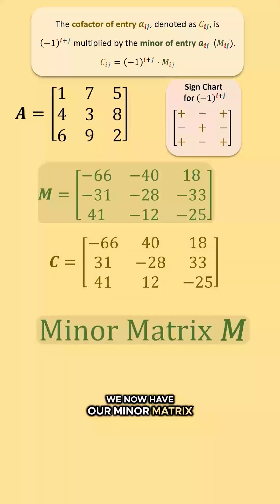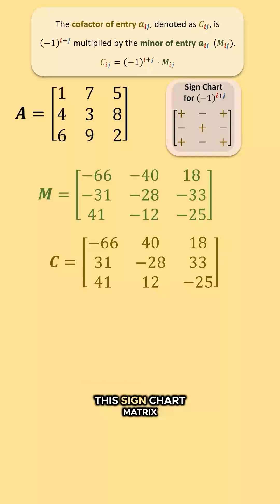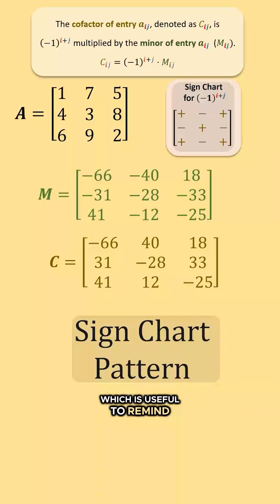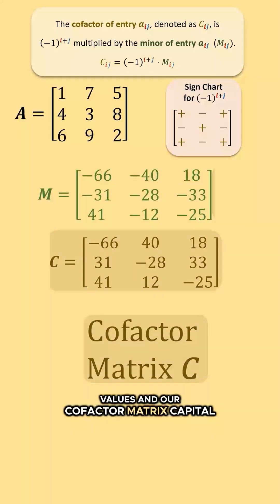We now have our minor matrix capital M, this sign chart matrix which is useful to remind us of these negative one raised to the I plus J power values, and our cofactor matrix capital C.